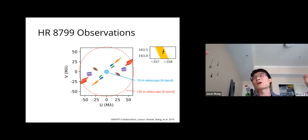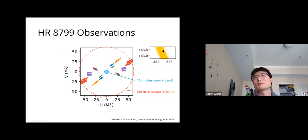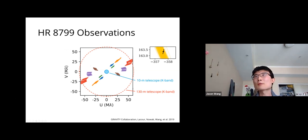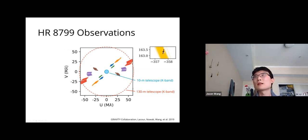With VLTI GRAVITY we probe spatial frequencies comparable to a 130-meter telescope along the long-baseline axis but have worse resolution on the shorter axis where we lack long baselines. This is why our error bars are much tighter in the RA direction and larger in the declination direction.